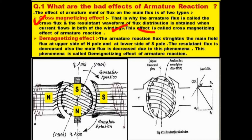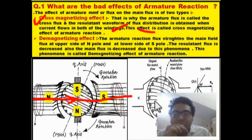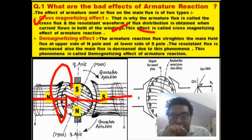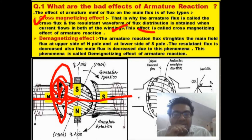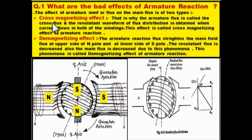The field flux always goes straight from north pole towards south pole. Due to armature currents, the armature flux is produced in a clockwise direction, which will always be at 90 degrees with the main flux. That is why it is called cross flux — because both fluxes always cross each other at 90 degrees. This is called the cross-magnetizing effect, and due to this, distortion is produced.